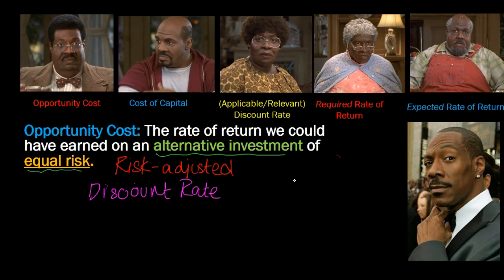The key takeaway from this video is this: your opportunity cost — which is the rate at which you discount your cash flows — must account for the level of risk that is embedded in those cash flows, because your discount rate needs to be the rate of return that you could have earned on an alternative investment of equal risk.